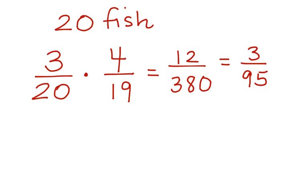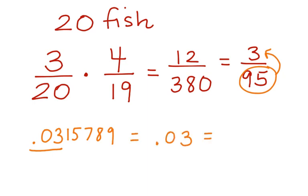Now, that might be a little tricky to understand as a probability, because that's such a strange fraction, 3 out of 95. So, we can convert it to a percent. Let's divide 95 into 3. And when we do that, we get 0.0315789. Let's just use the first two digits of the decimal. 0.03, which converts to 3%. There's a 3% chance of this compound event being successful.